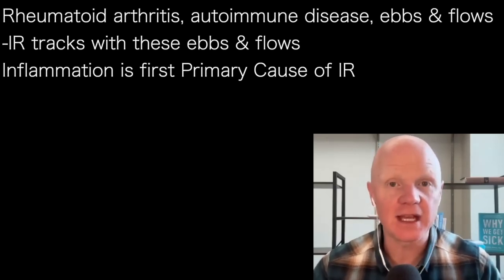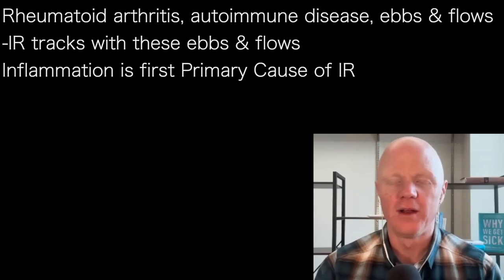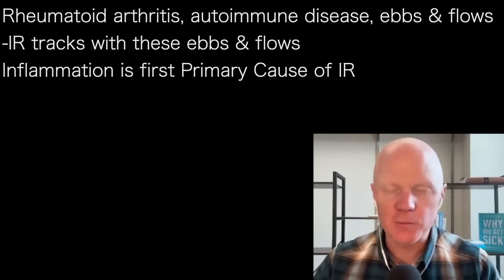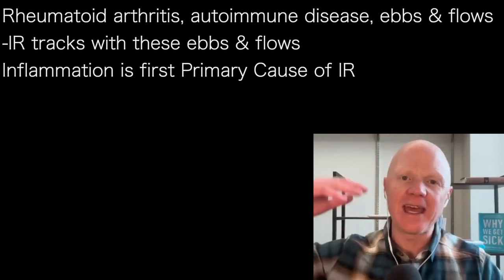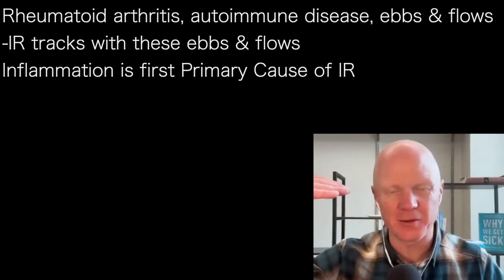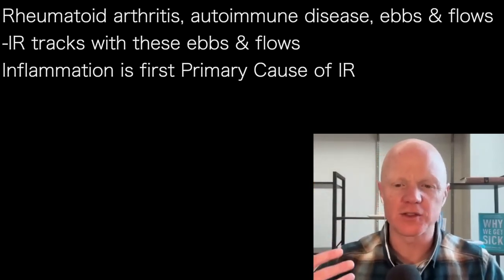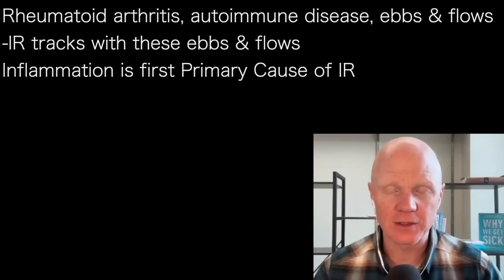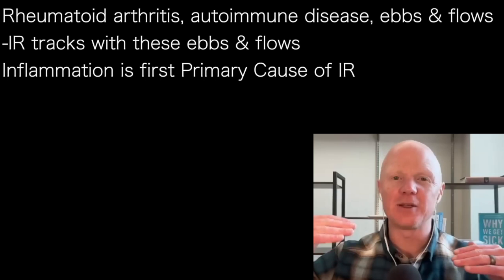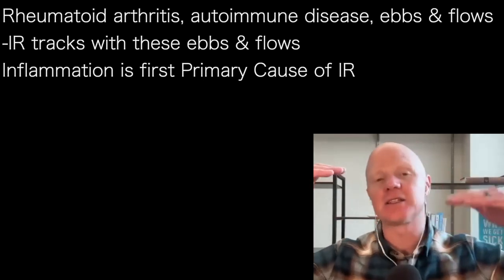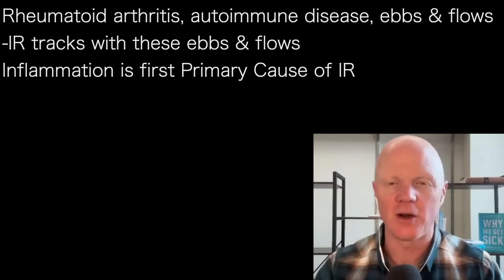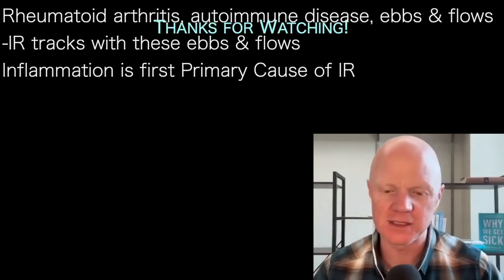There are some fascinating publications that have looked at rheumatoid arthritis. Like every autoimmune disease, rheumatoid arthritis has an ebb and a flow — periods where it's really active and aggressive and painful, and other periods where it retreats and settles down. You can actually track the insulin resistance that goes with it: as the body activates an immune response, insulin resistance goes with it. To sum all of that up, inflammation is what we could call the first primary cause of insulin resistance.